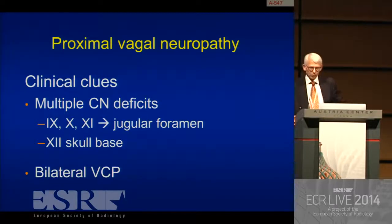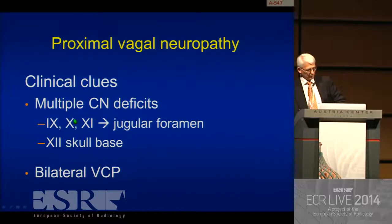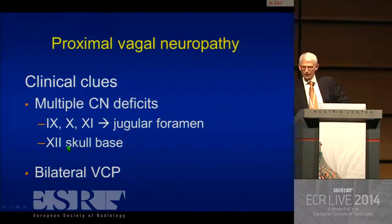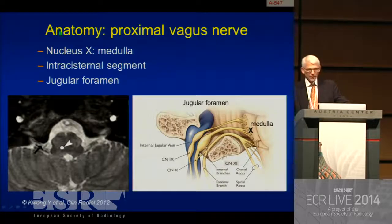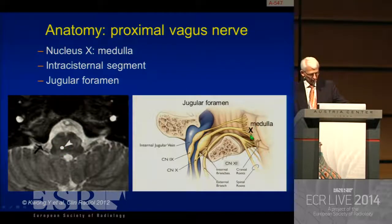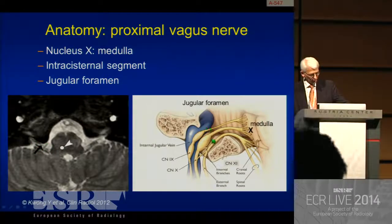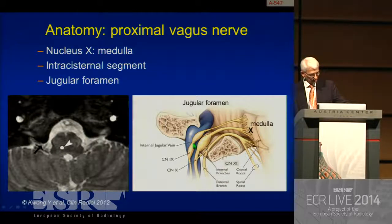Proximal vagal neuropathy: the clinical clue is that you not only have a deficit in the vagus nerve, but multiple cranial nerve deficits because these nerves go through the jugular foramen. Also, the hypoglossal nerve is very near in that area at the skull base. Patients who have a bilateral VCP also usually have a central offending lesion. The nucleus of the nerve is located in the medulla, then the nerve comes out with a small intracisternal segment, and then it goes through the jugular foramen together with cranial nerves 9 and 11.